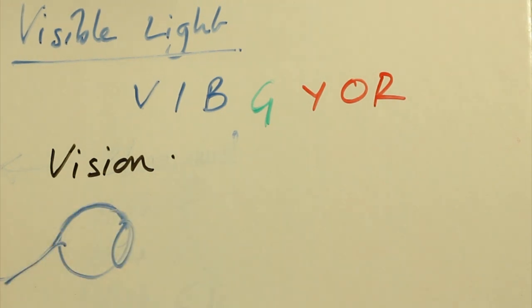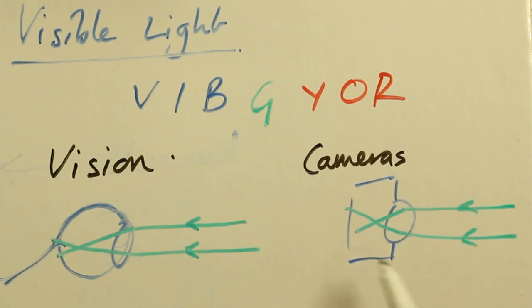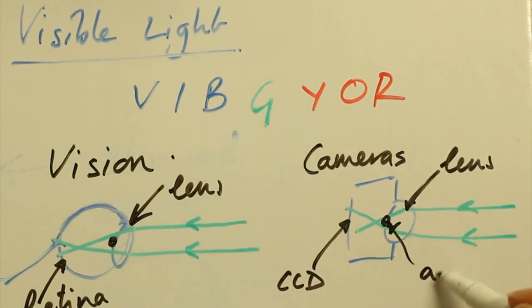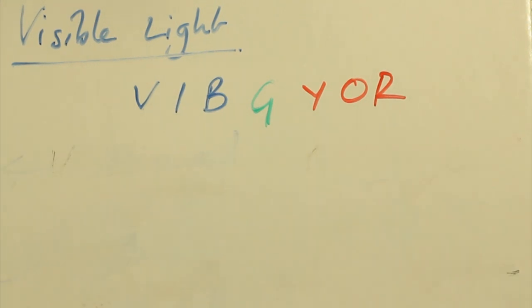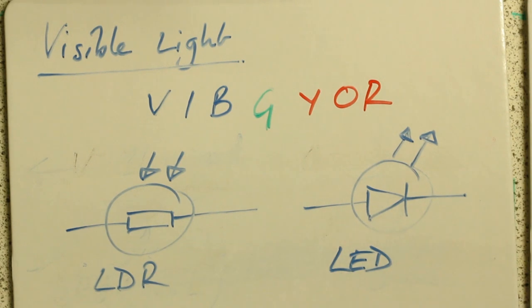One obvious use of visible light is to see. We have eyes which use lenses to focus light onto retinas. And eyes are very similar to cameras which use lenses to focus light onto CCDs or digital sensors. A light dependent resistor can detect visible light. We call it an LDR for short. An LED, a light emitting diode, can give out light. And obviously ordinary light bulbs give out light as well.